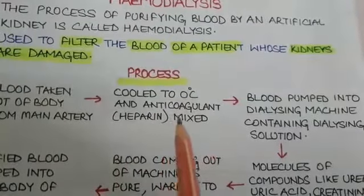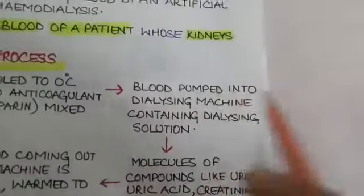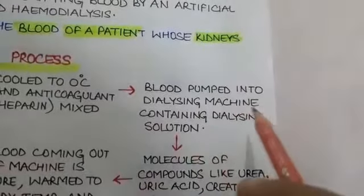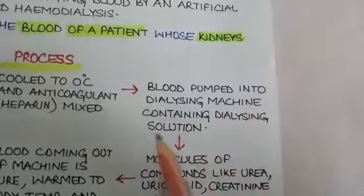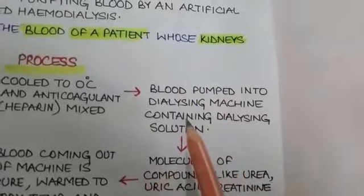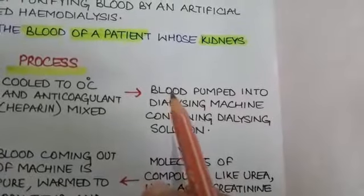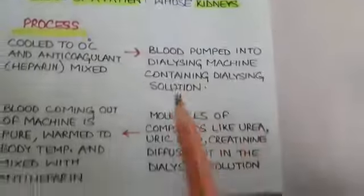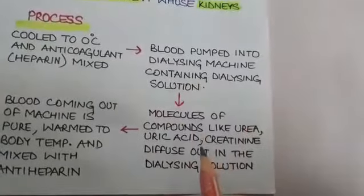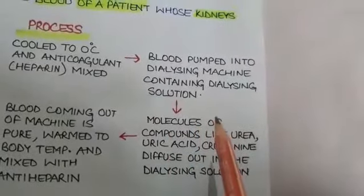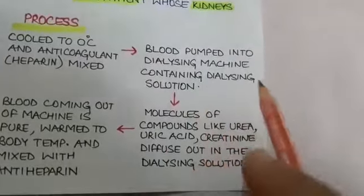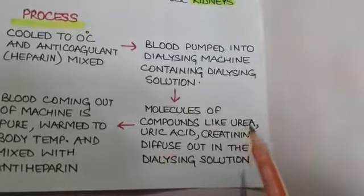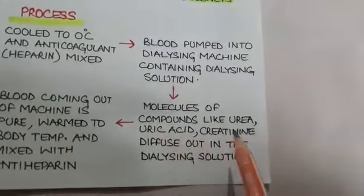After mixing with heparin, the blood is pumped into the dialyzing machine containing the dialyzing solution. The dialyzing solution has the same composition as blood except that it does not contain nitrogenous wastes. As the blood passes through the dialyzing solution, the nitrogenous waste material — such as urea, uric acid, and creatinine — diffuses from the blood into the dialyzing solution.